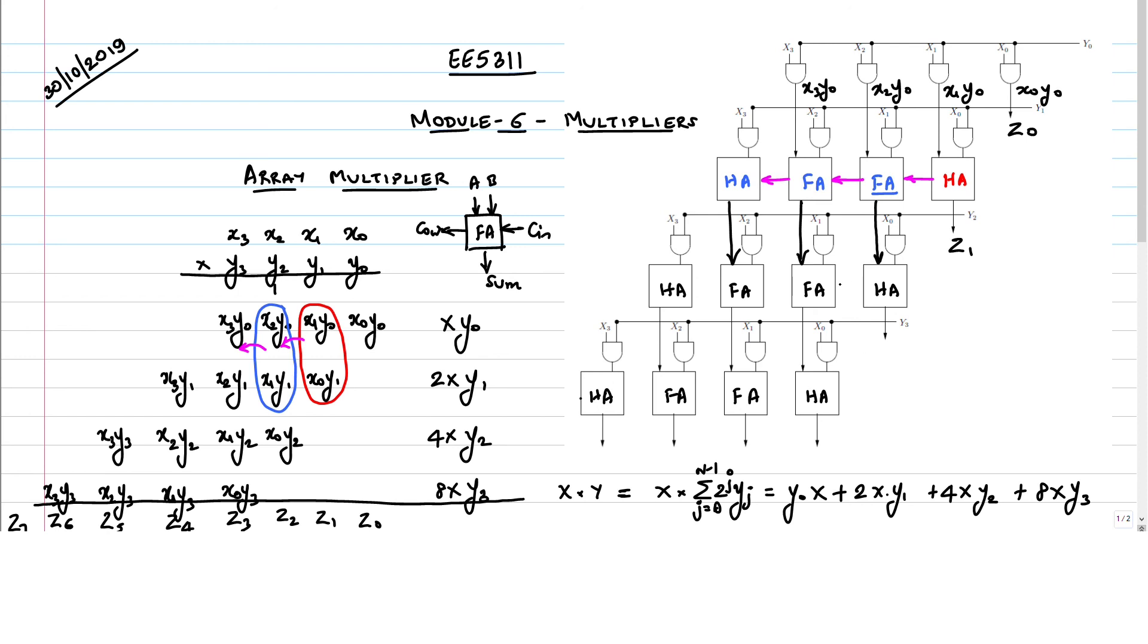Now what happens to the carry propagation again here? It is going to go like this, and of course the sum has just come down like that. What is this term here? Z2, this is z3, z4, z5, z6. Now what happened to the carry out from those left corner half adders? I am adding x3 y1 here, x3 y1 with the carry from the x3 y0, x2 y1 term, there is a carry out coming. I add those two terms, where does that carry go? That has to come here.